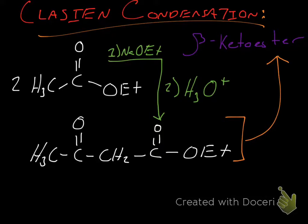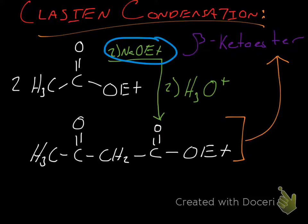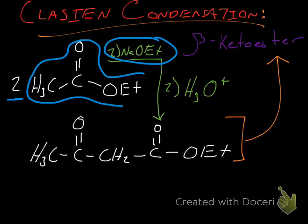In this case, what does it look like we're using? We have sodium ethoxide as our strong base. And what are our initial compounds? We're using two equivalents of the same compound, so we can't be using an ester with another type of carbonyl compound — we have to be using two esters. We are using ethyl acetate as our ester: two equivalents of ethyl acetate.